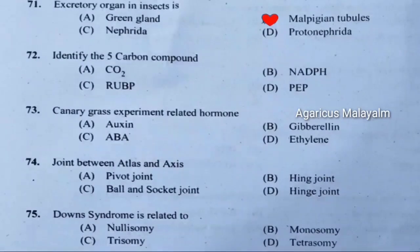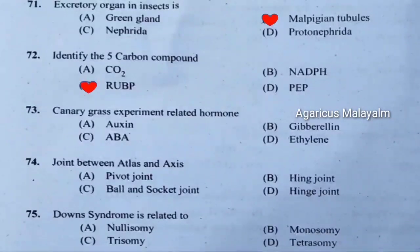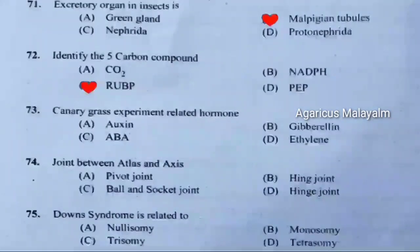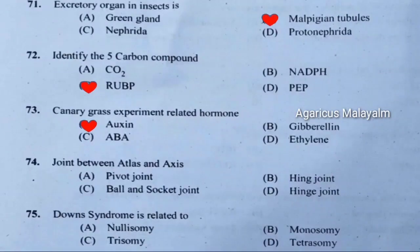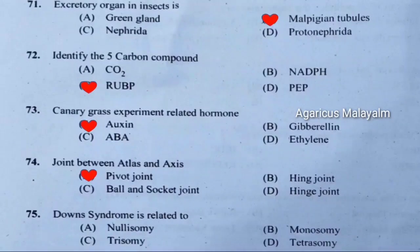Seventy-second question: Identify the 5-carbon compound. Correct answer is option C — RuBP. Seventy-third question: Canary grass experiment related hormone. Correct answer is option A — auxin. Seventy-fourth question: Joint between atlas and axis. Correct answer is option A — pivot joint. Seventy-fifth question: Down syndrome is related to. Correct answer is option C — trisomy.